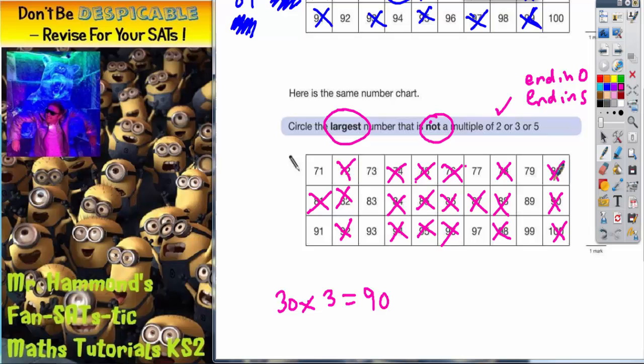If we go the other way, we can add on 3s to 90. Add on 3 is 93. Add on another 3 is 96, and another 3 is 99.